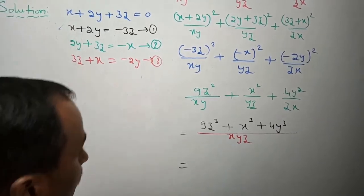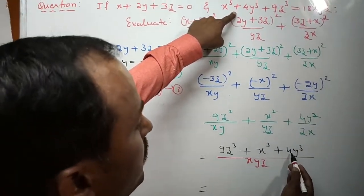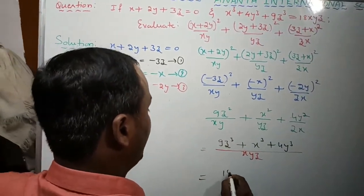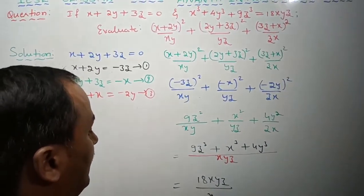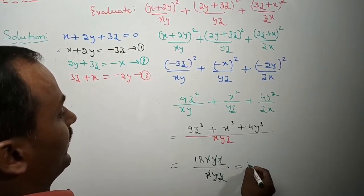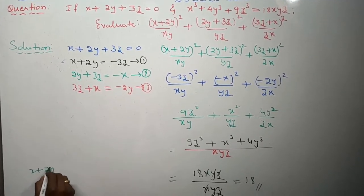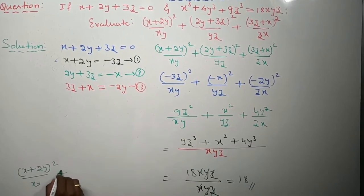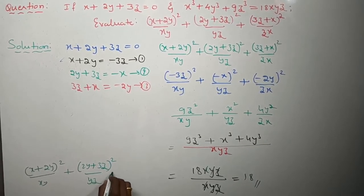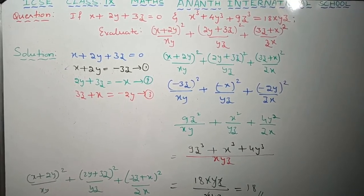Now observe the numerator: we have x cubed plus 4y cubed plus 9z cubed over xyz. From the given data, x cubed plus 4y cubed plus 9z cubed equals 18xyz. So the expression becomes 18xyz over xyz. The xyz in the numerator and denominator cancel, and the final answer is 18, children. So x plus 2y whole squared over xy, plus 2y plus 3z whole squared over yz, plus 3z plus x whole squared over zx equals 18.